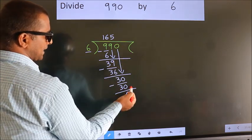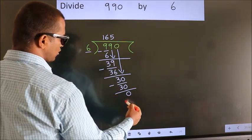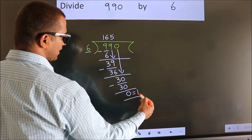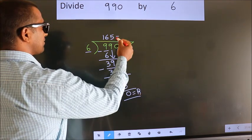No more numbers to bring it down. So we stop here. This is our remainder. This is our quotient.